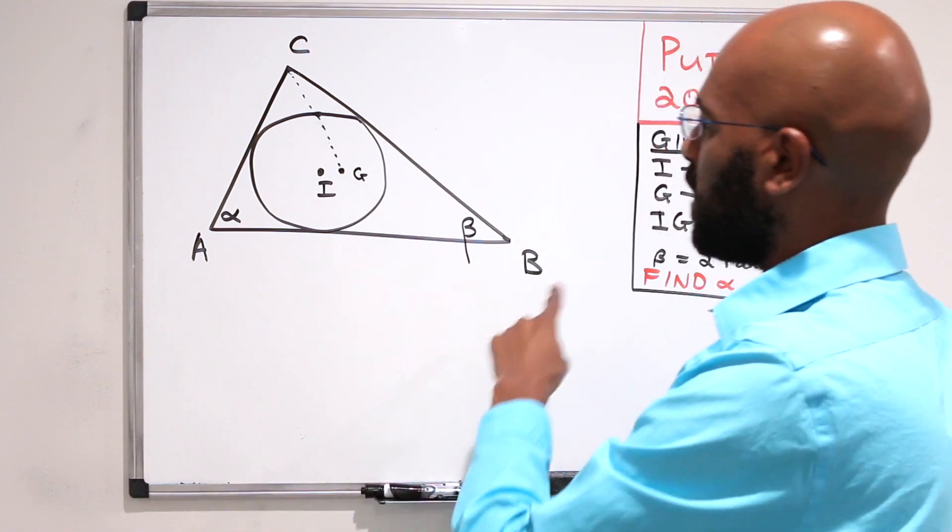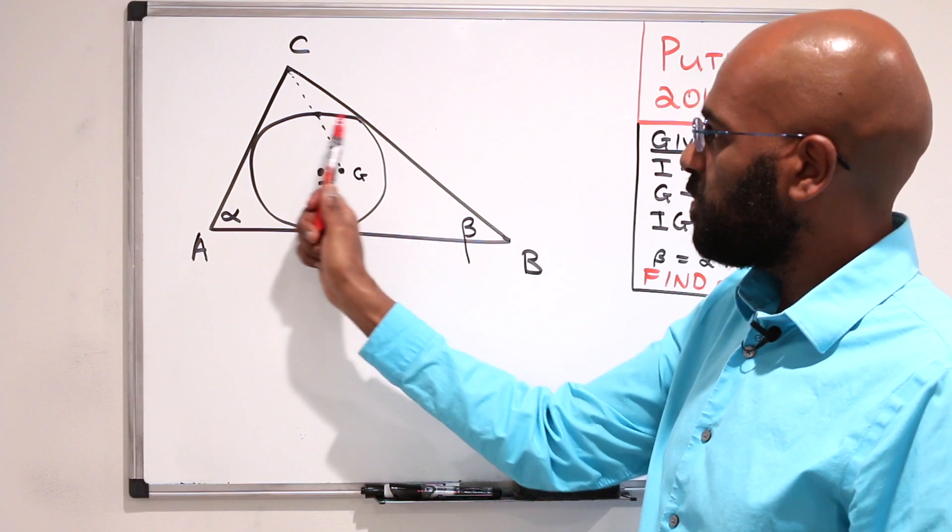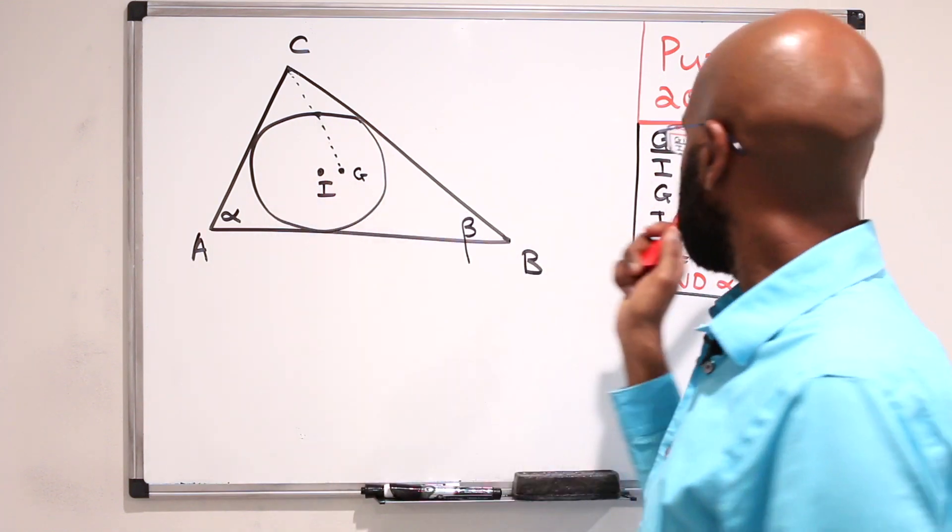So the setup is that you have this triangle ABC and you have some information about it. First of all, let I be the center of the inscribed circle, so that's the incenter.